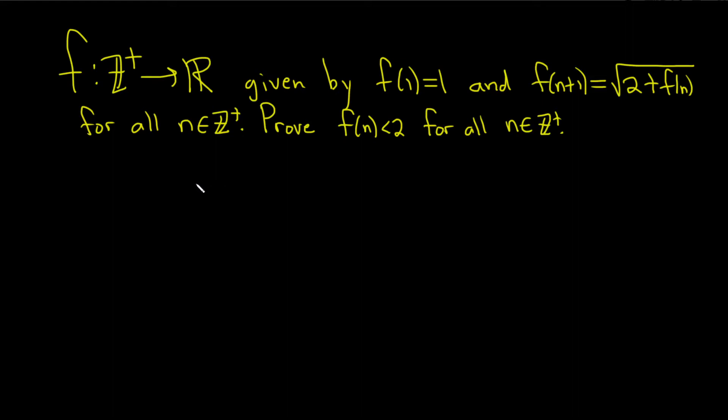In this problem we're going to do an induction proof. So we have a function defined from the set of positive integers into the set of real numbers. It's given by f(1) equals 1, and we have to prove that f(n) is less than 2 for all positive integers. Our function is given by a recursive definition, so f(1) equals 1 and the other terms are given by this equation here. And we're trying to show this is true, so this is going to be our statement, S sub n. We have to show it's true for all positive integers.